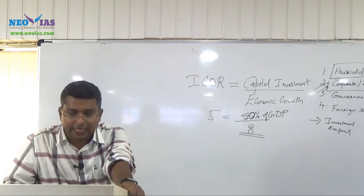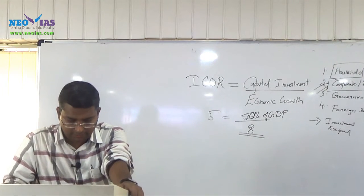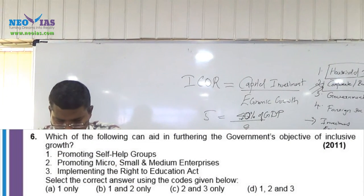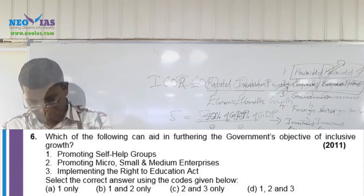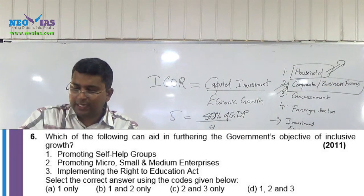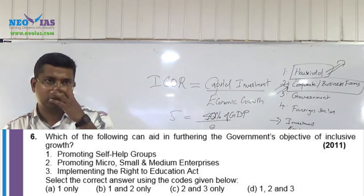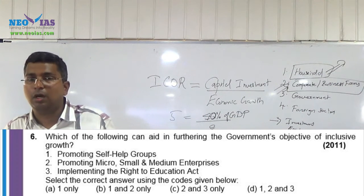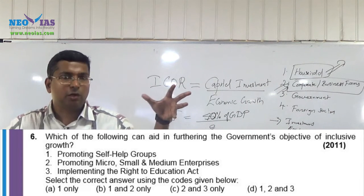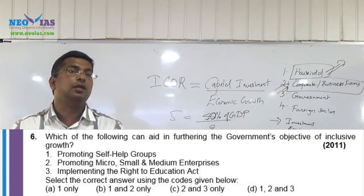Since I have discussed inclusive growth, answer question number 6: which of the following can aid in furthering the government's objective of inclusive growth? Making economic growth inclusive means it has to include all the sections of the country.